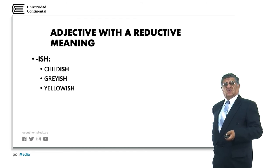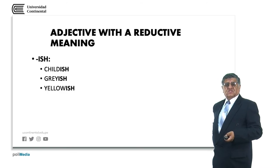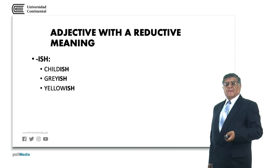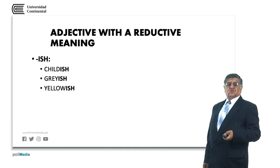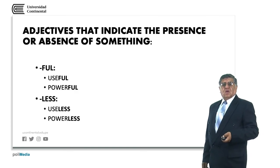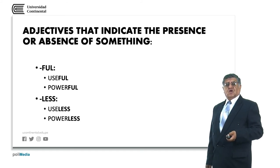Adjectives can be used to give a reductive meaning with -ish. Childish means acting like a child. Greyish means having an appearance of grey. Yellowish means an appearance of yellow — it's not quite yellow but it seems yellow. For presence or absence: -ful as in useful means full of utility; powerful means full of power. -less as in useless means without use; powerless means having no power.